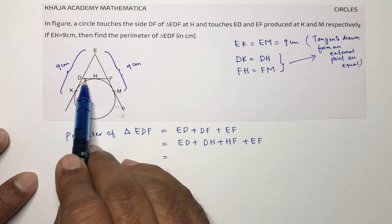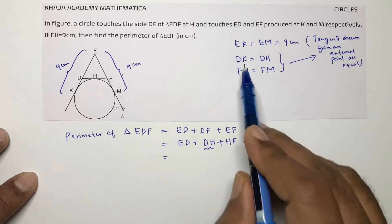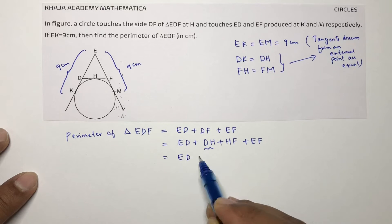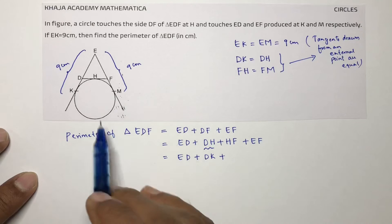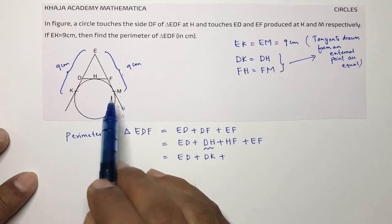Now see, this DH you can write as DK. ED plus DK and HF you can write as FM.